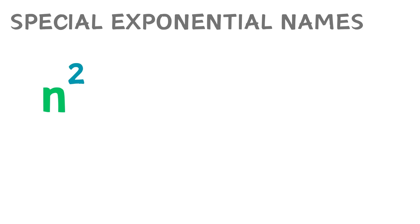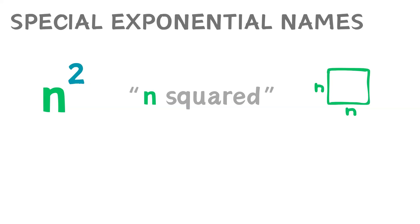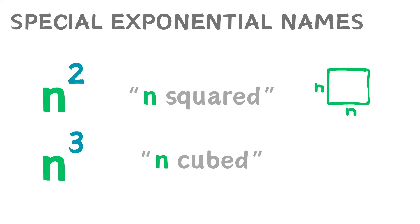There are some special names for certain exponents. When an exponent is 2, we call it squared, because it represents the area of a square. When an exponent is 3, we call it cubed, because it represents the volume of a cube.